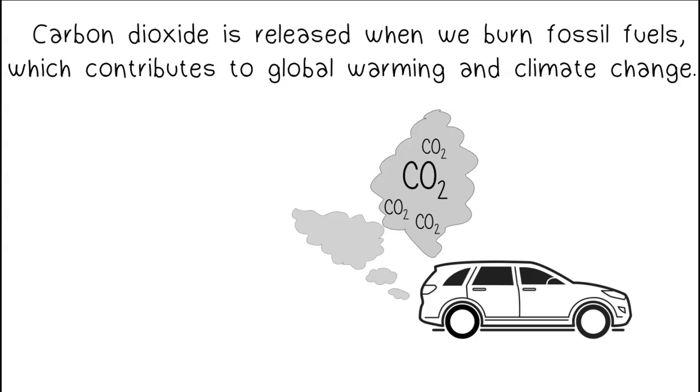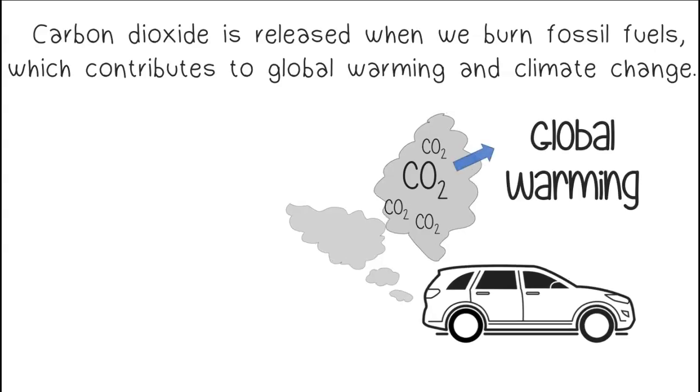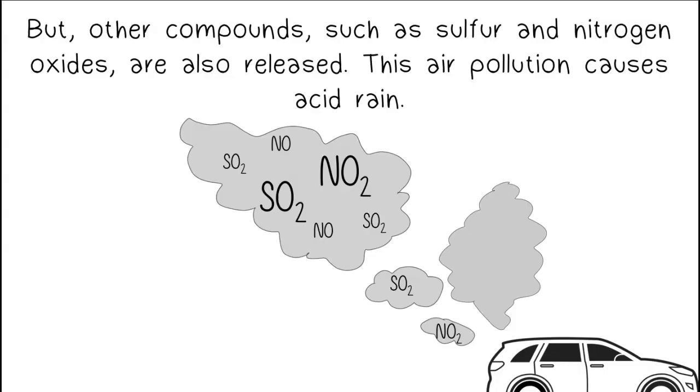Carbon dioxide is released when we burn fossil fuels, which contributes to global warming and climate change. But other compounds such as sulfur and nitrogen oxides are also released. This air pollution causes acid rain.